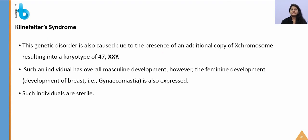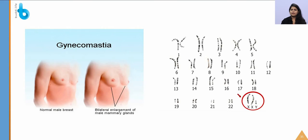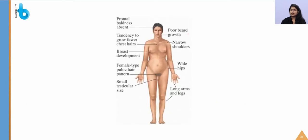Klinefelter syndrome involves 47 chromosomes with an extra X chromosome. Instead of XY, the individual has XXY. Such individuals show masculine development but also female characteristics. The most important feature is gynecomastia — development of breast tissue in males. These individuals are generally sterile.